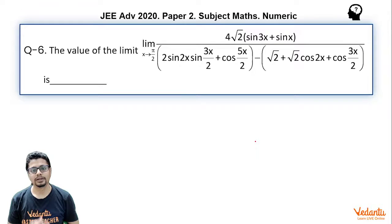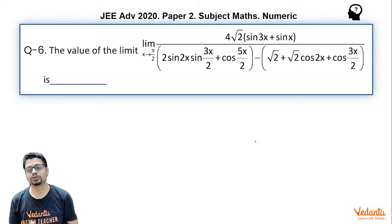The value of the limit, limit x tending to π/2, numerator being 4√2(sin 3x + sin x), denominator being 2 sin 2x sin(3x/2) + cos(5x/2) minus √2 plus √2 cos 2x plus cos(3x/2).